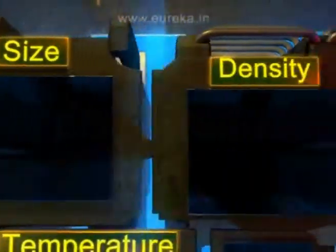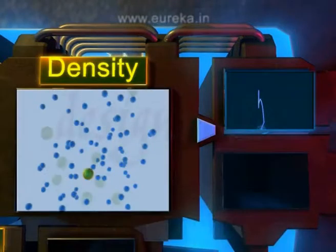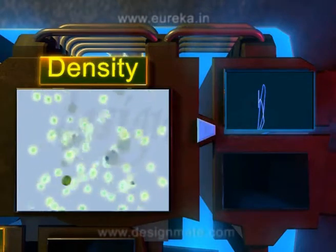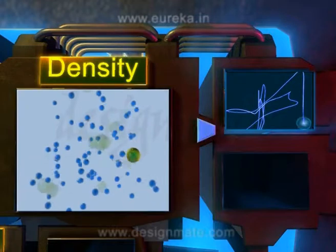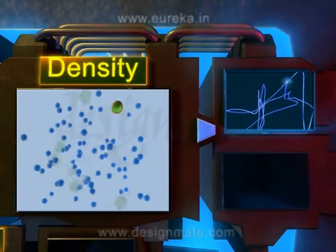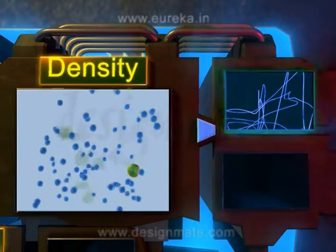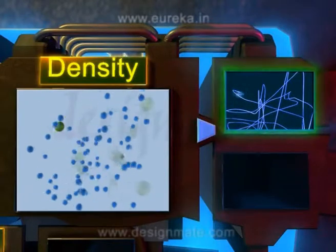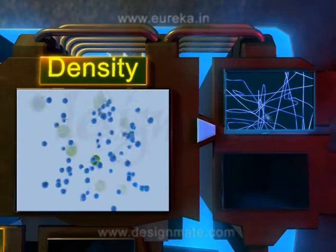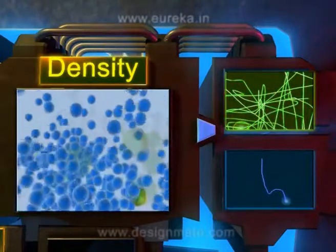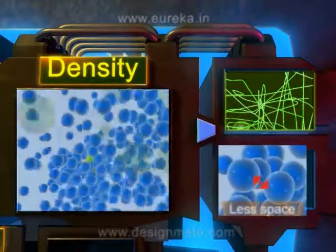Next, the Brownian motion depends inversely upon the density of the medium also. Low density of any liquid means less number of molecules or more inter-molecular space. Hence, any particle suspended in this liquid, after undergoing collisions with these molecules, can move about freely in comparatively larger space, thereby exhibiting more Brownian movement. We have seen that the Brownian movement exhibited by the particle will be more in a liquid having low density, while it will be less in a denser liquid due to more number of molecules, or in other words, less inter-molecular space.